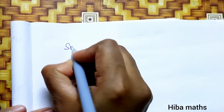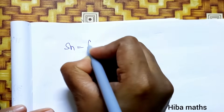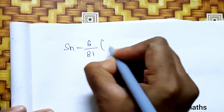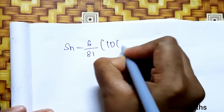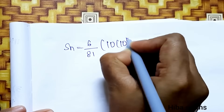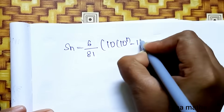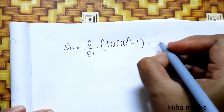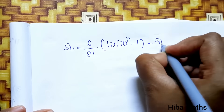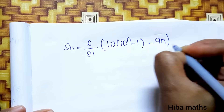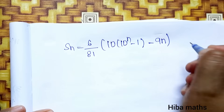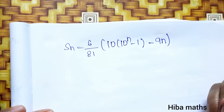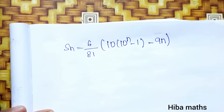Simplifying: S(n) = (6/81)·[10·(10ⁿ − 1) − 9n]. That is the sum for the second series. Thank you so much for watching.